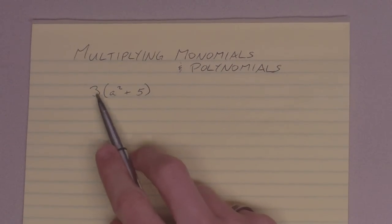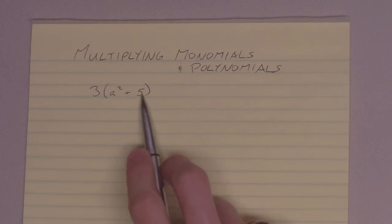We've got a monomial, 3, no variables in it, times a nice little binomial here, a squared plus 5.